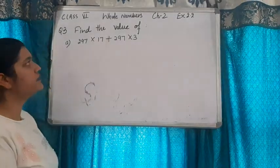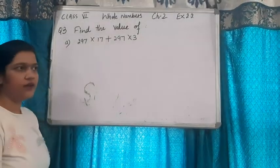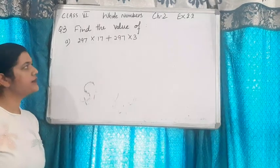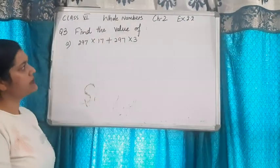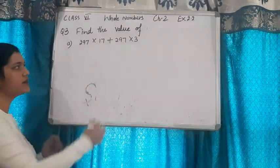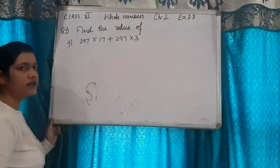Question number 3, find the value of the following: 297 multiplied by 17 plus 297 multiplied by 3.